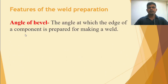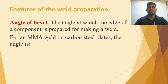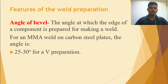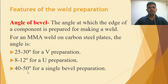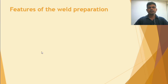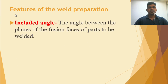What is the angle of bevel? It is the angle at which the edge of a component is prepared for making a weld. For a MMA weld on carbon steel plate, as a basic example: 25 to 30 degrees for a V preparation, 8 to 12 degrees for a U preparation, 40 to 50 degrees for a single bevel preparation, and 10 to 20 degrees for a J preparation. Always refer to your WPS to get the exact values.